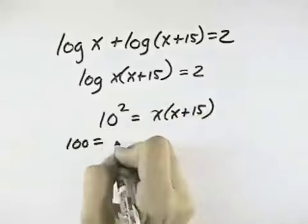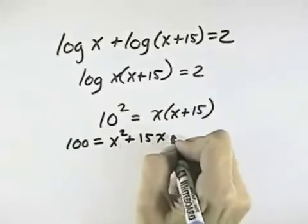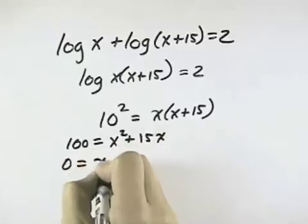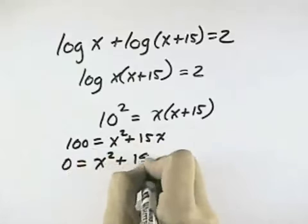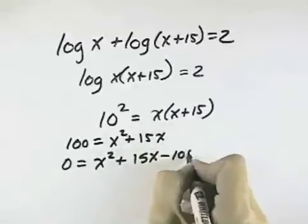So I have 100 equals x squared plus 15x, and then subtracting 100 from both sides, I get 0 equals x squared plus 15x minus 100.